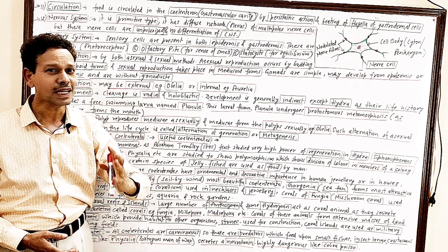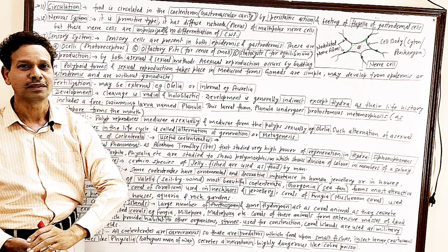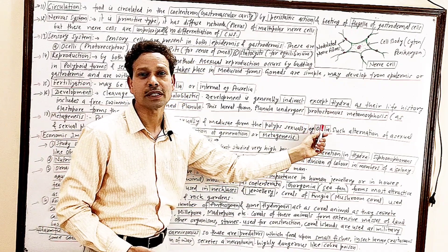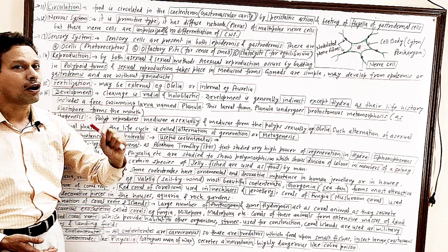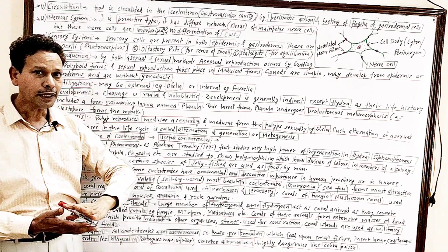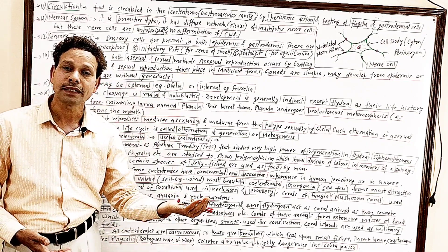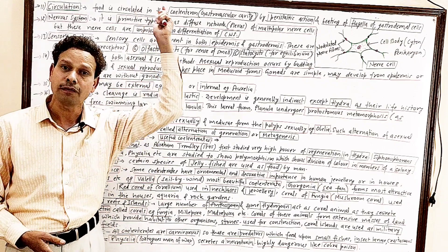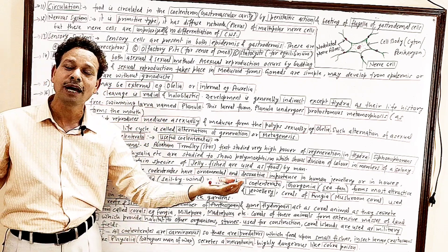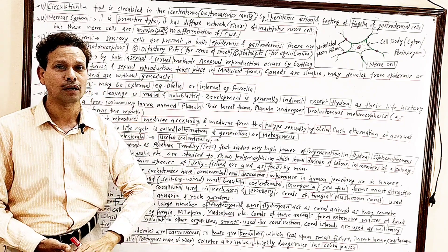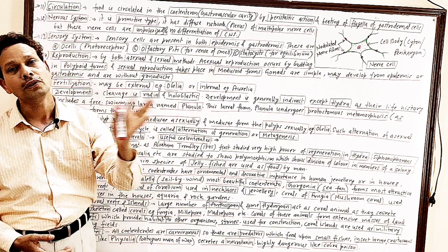The planula larva undergoes protostomous metamorphosis — protostomous means the blastopore of the embryonic stage gives rise to the mouth. Development is indirect because in the life cycle a larva is present. In the case of Porifera, the free-swimming larva was amphiblastula — having half the body flagellated and half non-flagellated — but in cnidarians the larva is the planula.